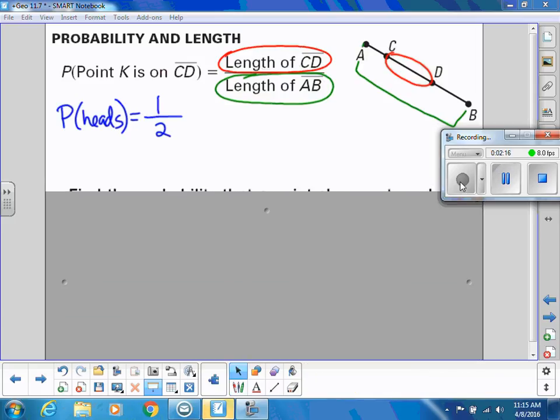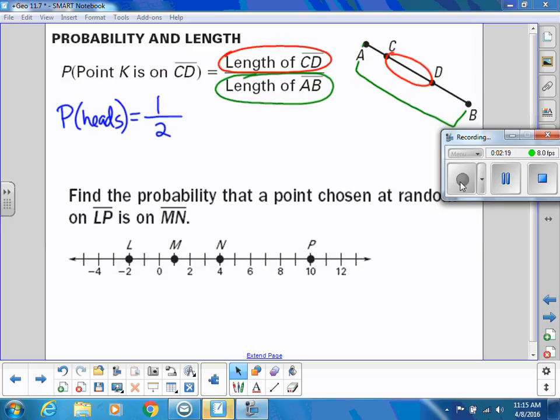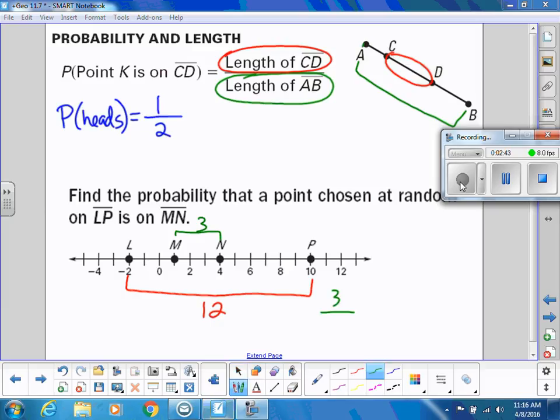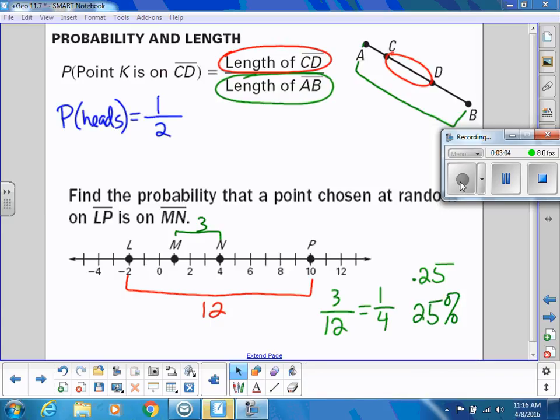For example, find the probability that a point chosen at random on LP is on MN. LP goes all the way from negative 2 to 10, so that's a total distance of 12. MN goes from 1 to 4, so that's a total distance of 3. I would say the probability that it's on MN would be 3 out of 12, and I can reduce that to 1 fourth. We can write it as a fraction, as a decimal (0.25), or as a percentage. So a 25% chance of being on that segment MN.